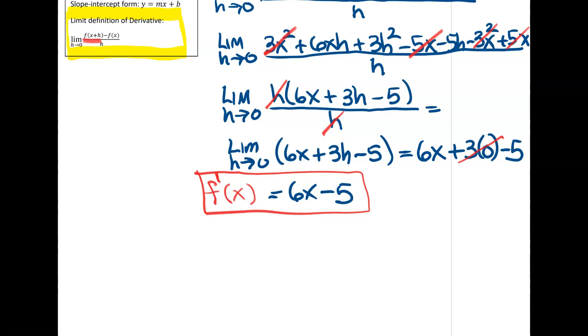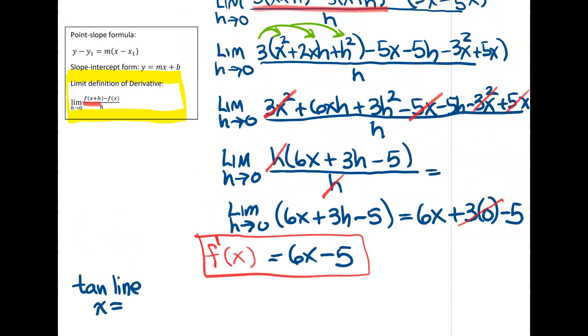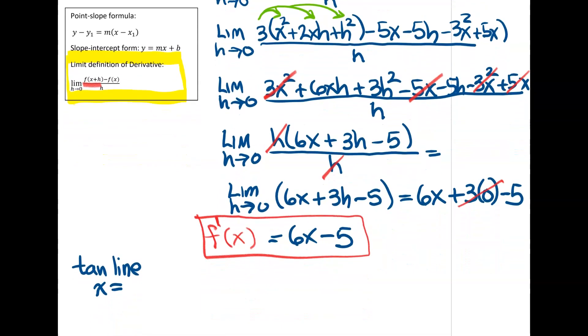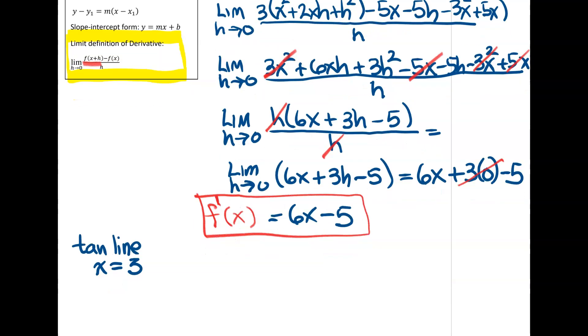So the second part was find the tangent line. And it asked me for finding the tangent line at the point. And they gave me an x value. Let's go back up here and make sure we have the right one. It says find the equation of a tangent line at the point x equals 3. Okay, so at x equals 3, we're going to find the tangent line. So a couple of things that we're going to need. To get an equation of any line, you need a point.